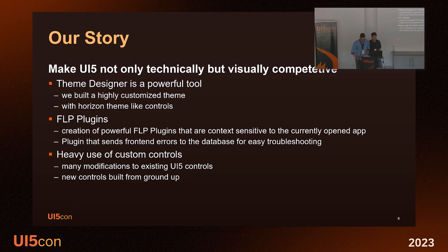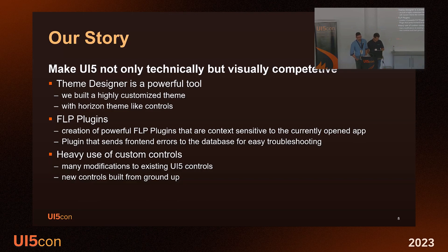As an example, we extended the launchpad with a few plugins. We made our settings app accessible from every other app by integrating a button into the launchpad header. When you opened the settings app, it was context-sensitive to the app which opened it — so you could make settings and go back to your app, and it was already refreshed with the new settings. Another plugin we built could send frontend error reports to the backend for easy troubleshooting.